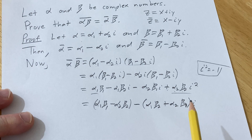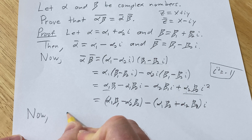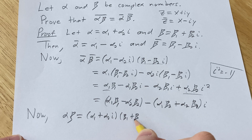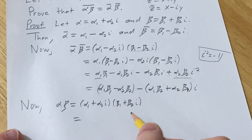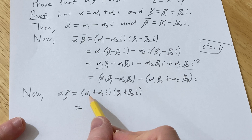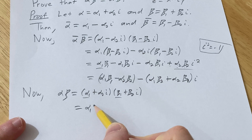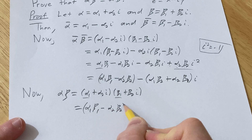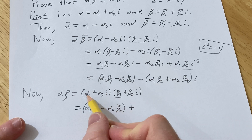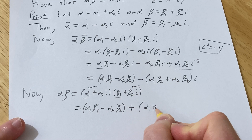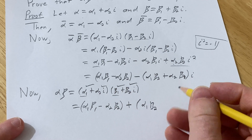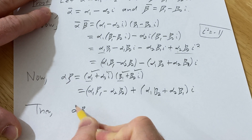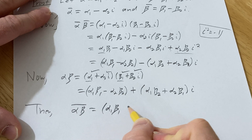Now we need to look at the product alpha·beta and take its conjugate. We know alpha·beta equals (alpha₁ plus alpha₂·i)(beta₁ plus beta₂·i). Let's do the multiplication all at once. The real part is alpha₁·beta₁ minus alpha₂·beta₂ (the minus comes from i²), and the imaginary part is alpha₁·beta₂ plus alpha₂·beta₁, times i.